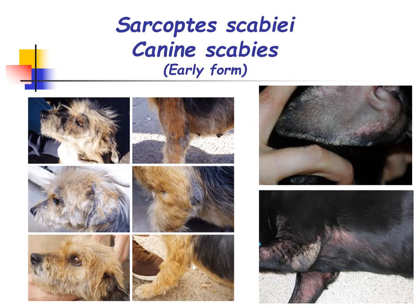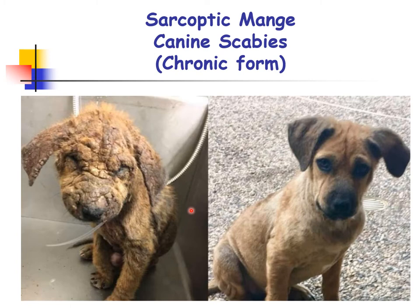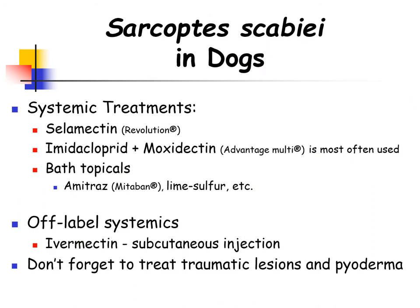A commercially available ELISA test is used to detect specific antibodies to the parasite. Because mites can be difficult to detect, if Sarcoptes is on the differential diagnosis list but no mites are found, a therapeutic trial would be warranted. This diagram shows scabies mite and mite eggs from skin scrapings, followed by photos showing early and chronic forms of canine scabies with extensive crusting and hyperkeratosis.